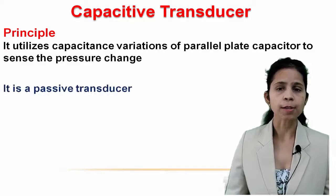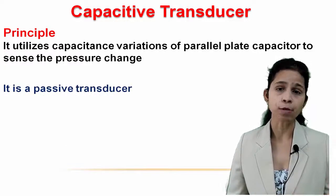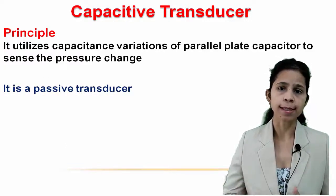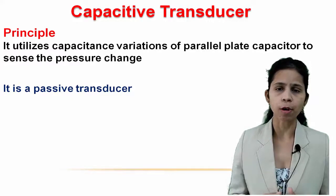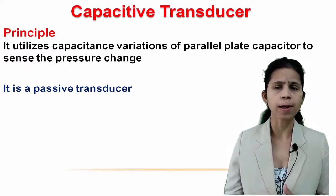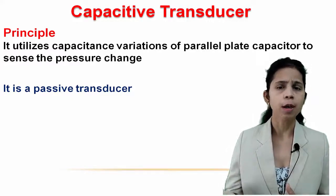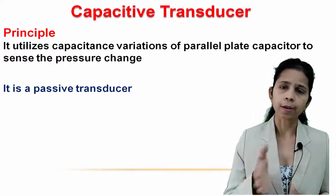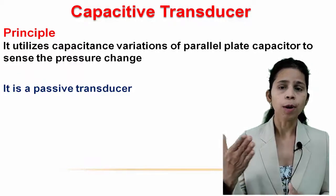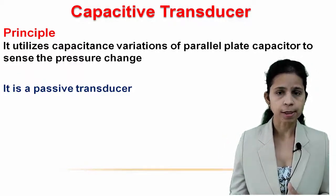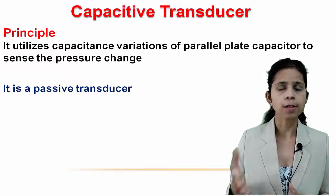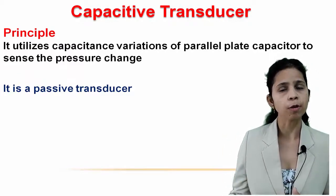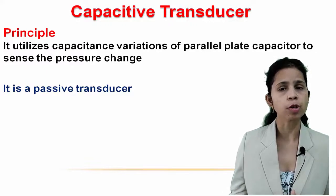Capacitive transducer is a passive transducer. It senses the physical quantity — that may be pressure, force, weight, sound, or anything — and converts it into a capacitance change. This change in capacitance is then converted into an electrical voltage or signal.